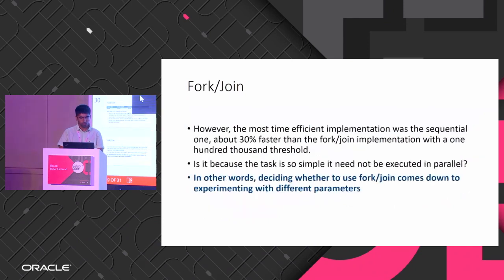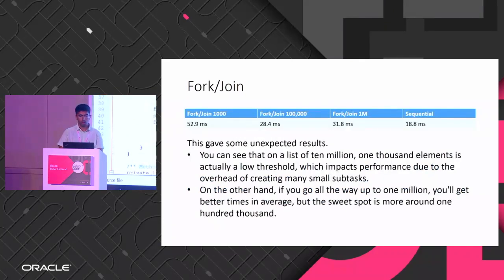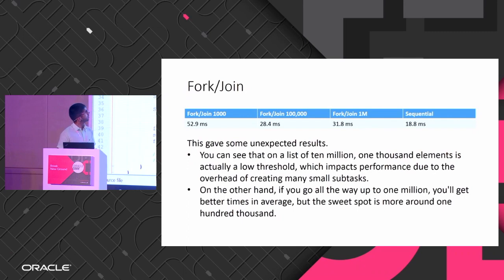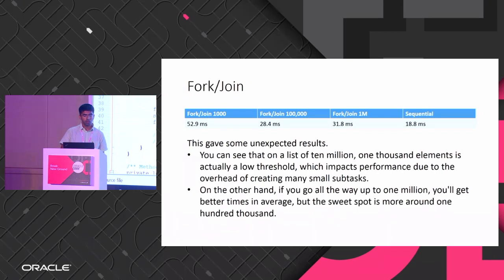I'll go to the code and show you. I've created code where I have a list, and I'm adding the elements of the list. This is an ideal problem for divide and conquer because the elements are stateless. I have a threshold of five — below five elements I execute sequentially; above five I execute in parallel. The SumAction is my task, and for each task you have to override the compute method.